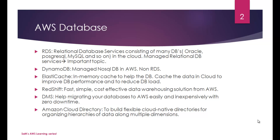DMS stands for Database Migration Services. It helps migrate your databases to AWS easily and inexpensively with zero downtime, with a wide variety of options for the databases supported by AWS. The final and latest addition is Amazon Cloud Directory, which builds flexible cloud-native directories for organizing hierarchies of data along multiple dimensions. It is still in preview, so definitely something to watch out for.